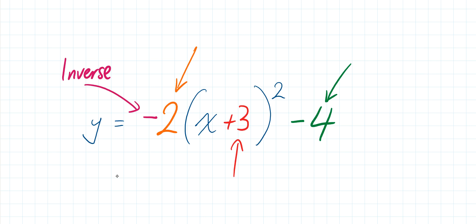Secondly, in the orange we've got our scale factor. What the scale factor does is it makes our parabola wider or thinner depending on whether the value is larger than one or less than one. Because we've got a scale factor larger than one, we're going to end up with a thinner parabola, whereas if we had a scale factor less than one we'd end up with a wider parabola. So that's our scale factor.